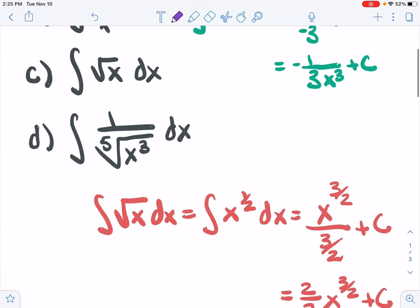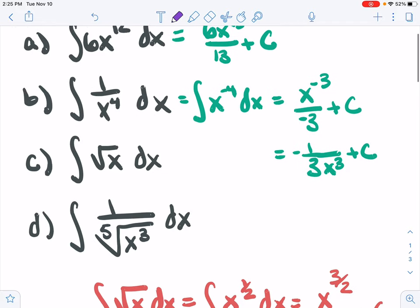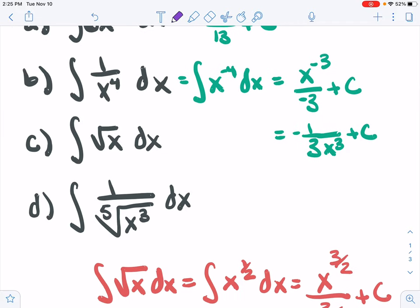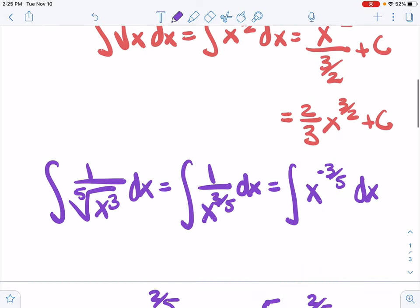So there's four examples using the power rule. Sometimes you need to write an exponent in the denominator, write as a negative, or roots, write those as exponents, and then we can use the power rule.